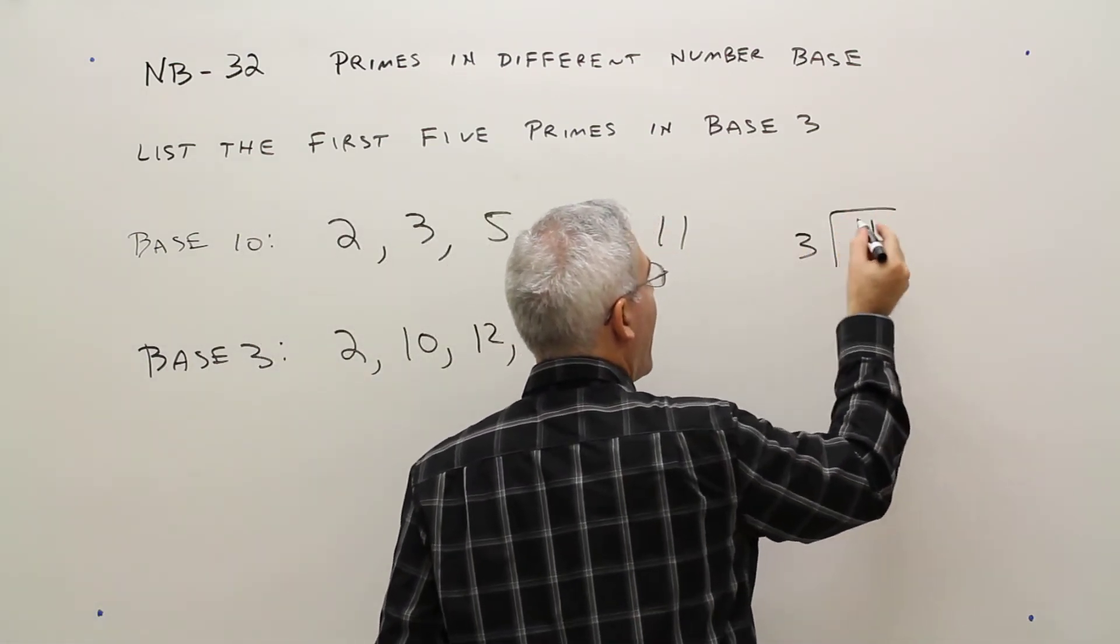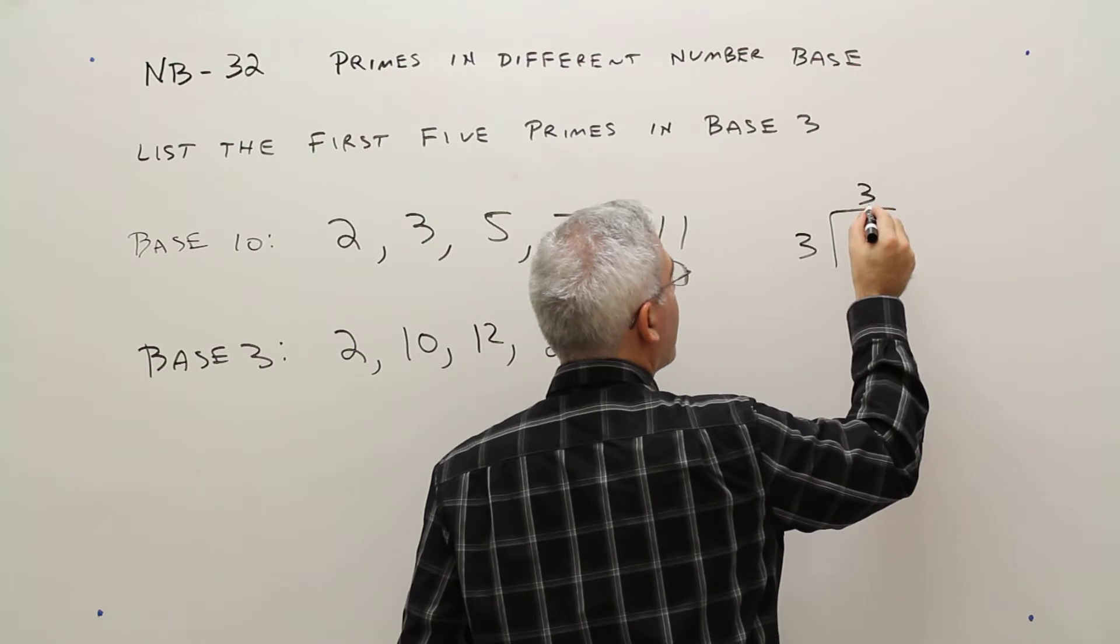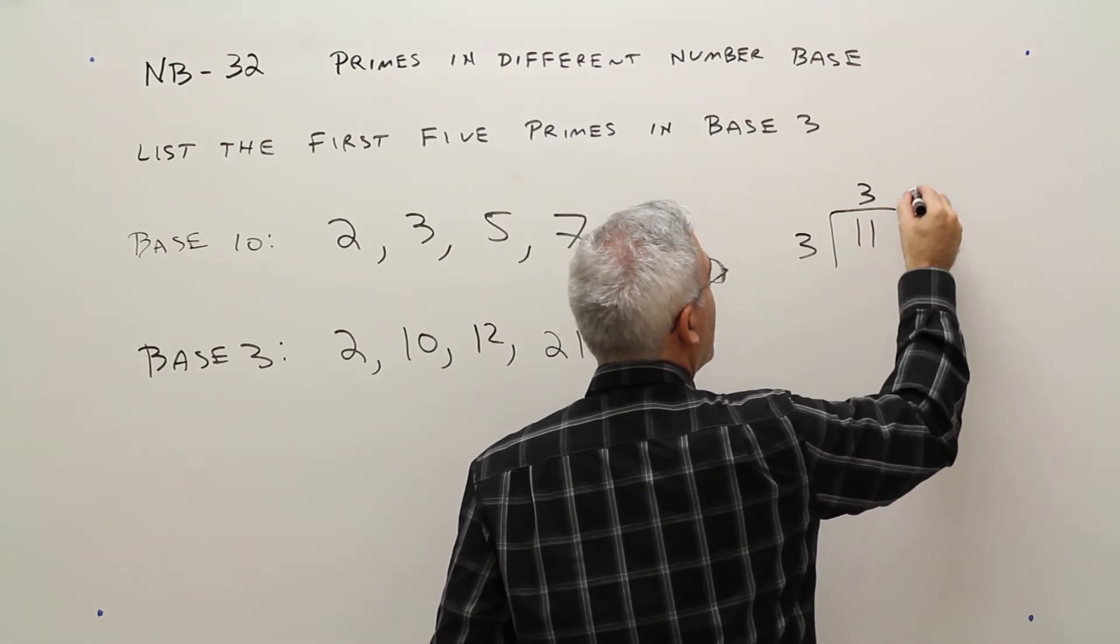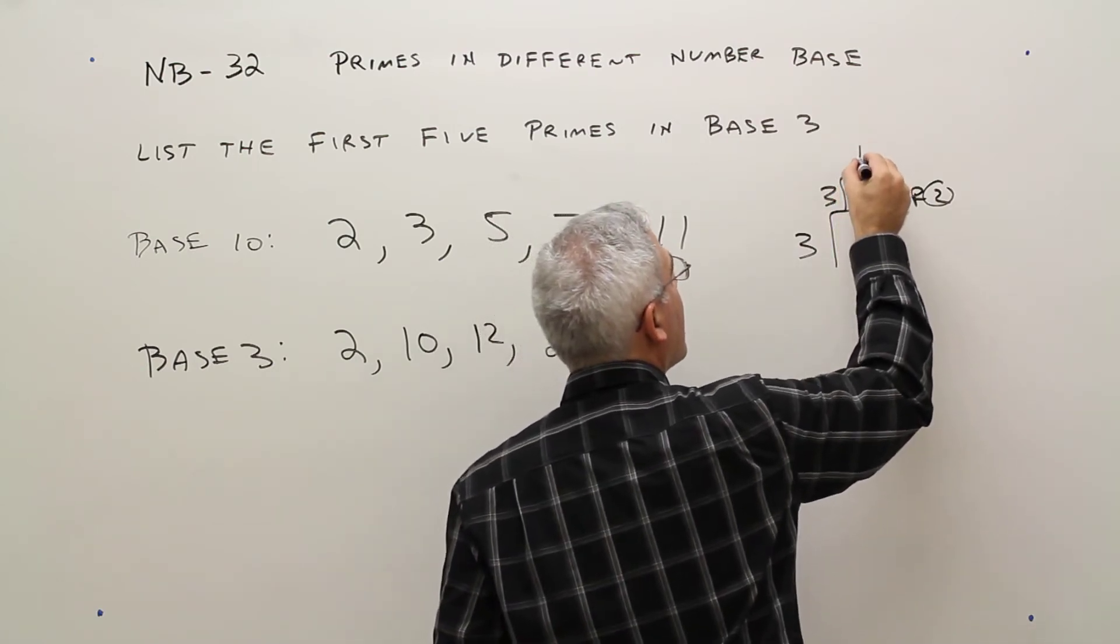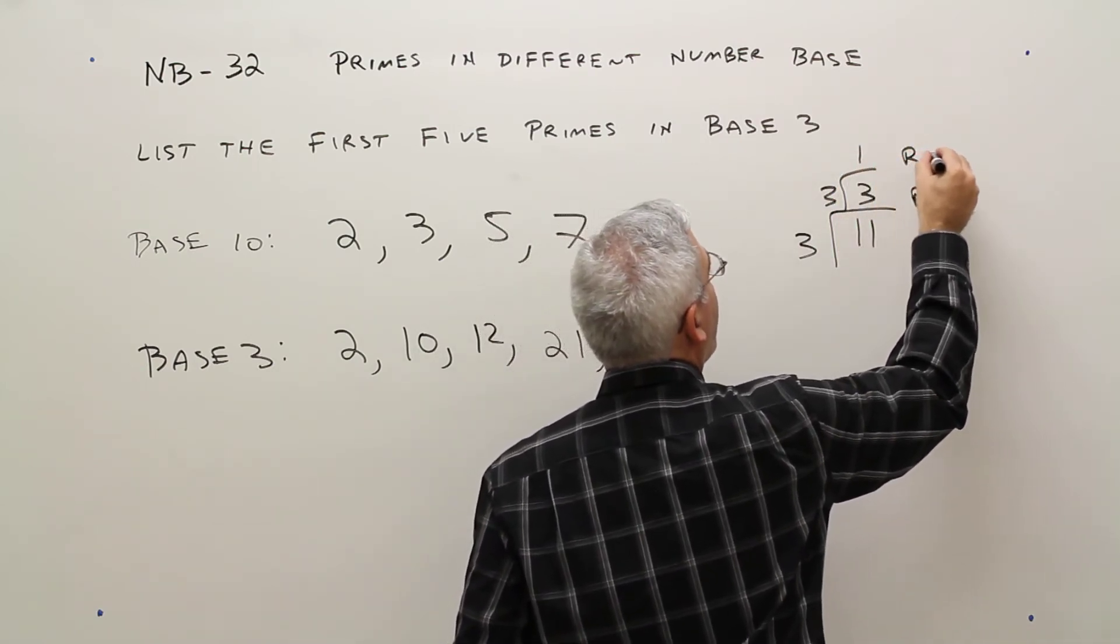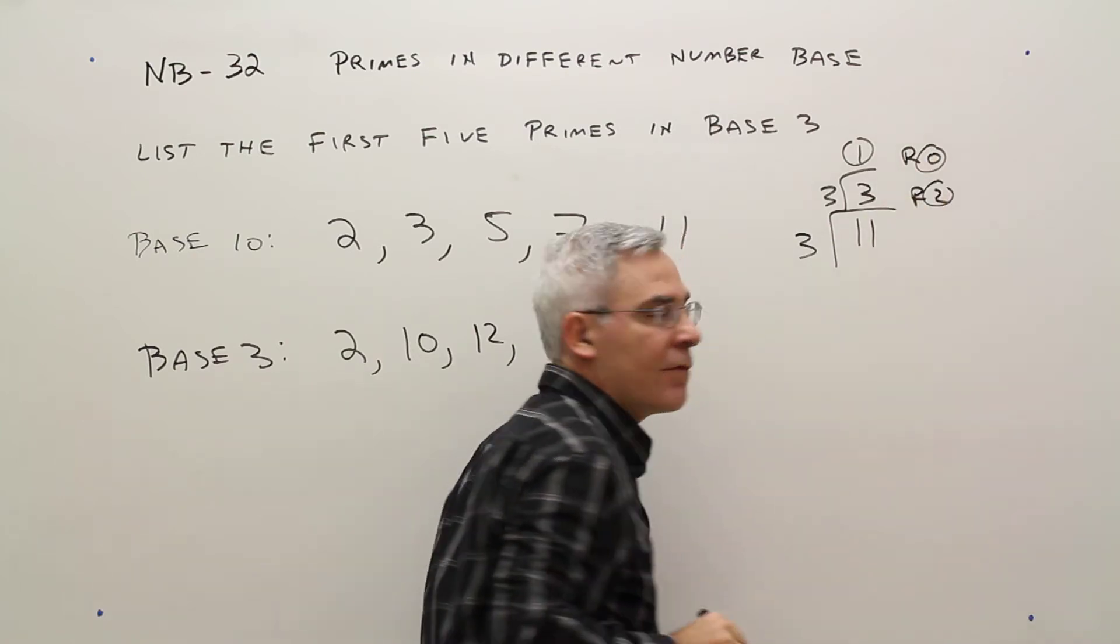So 11 divided by 3 is 3, remainder 2. 3 divided by 3 is 1, remainder 0. So it would be 1, 0, 2.